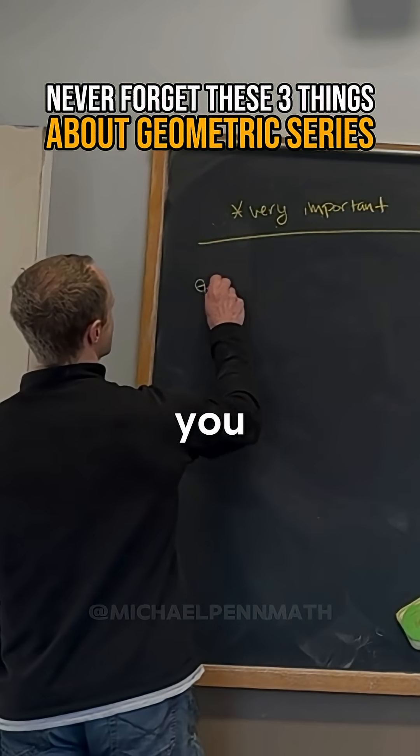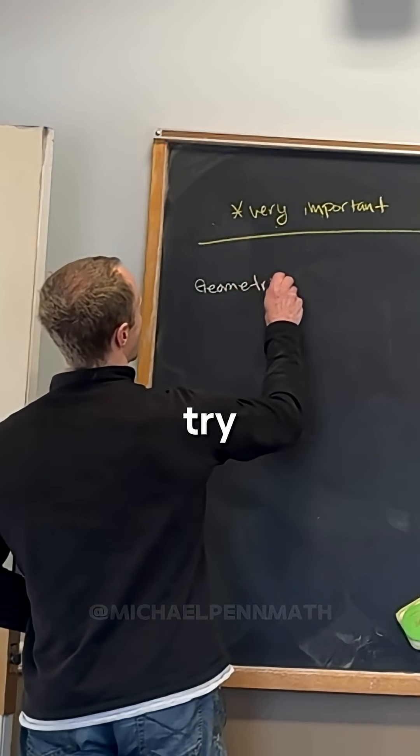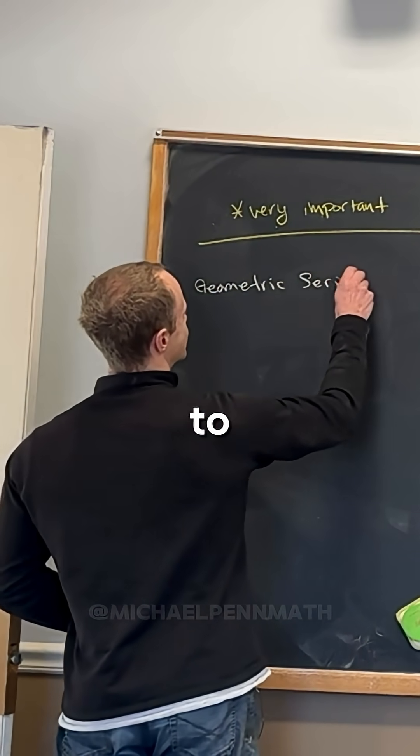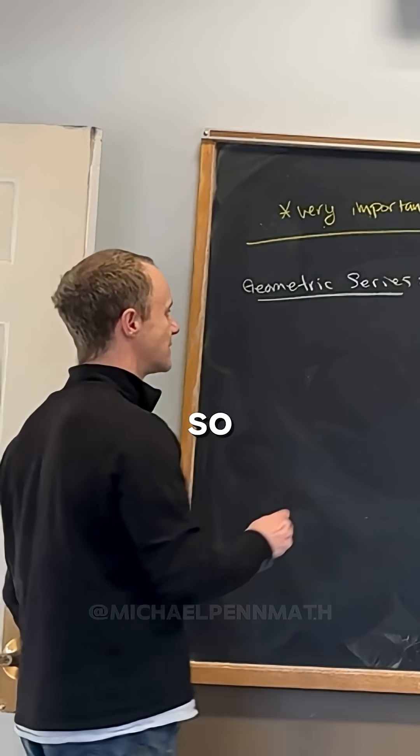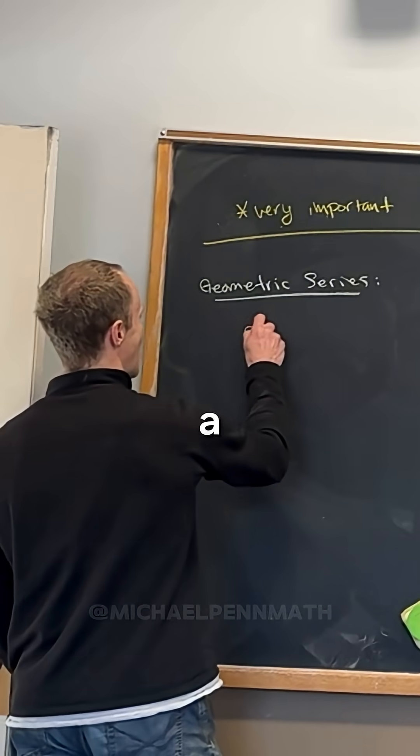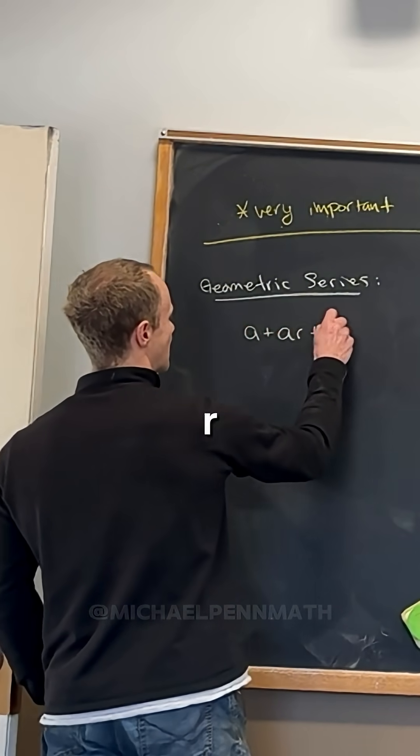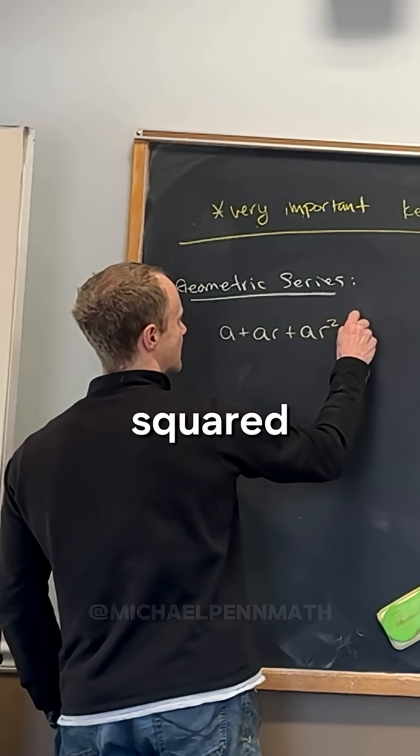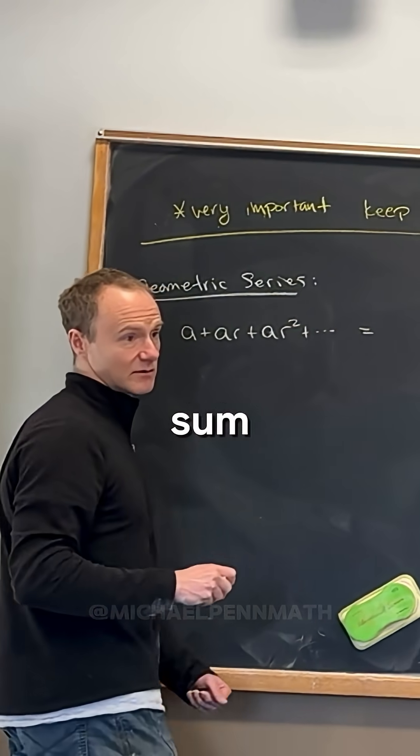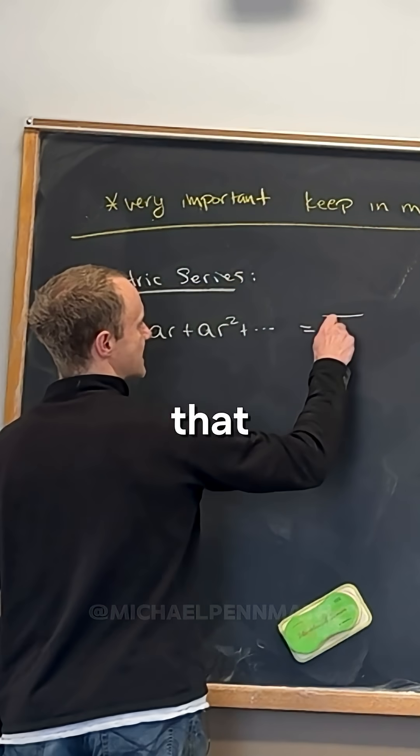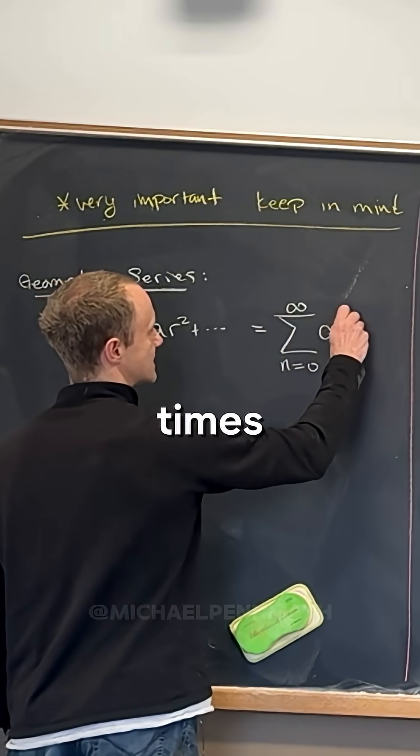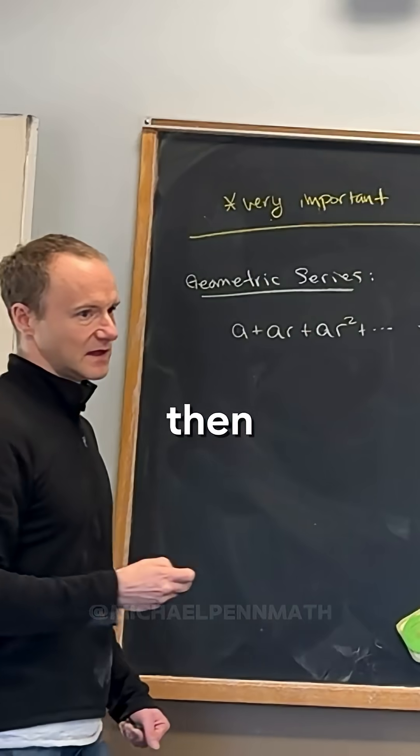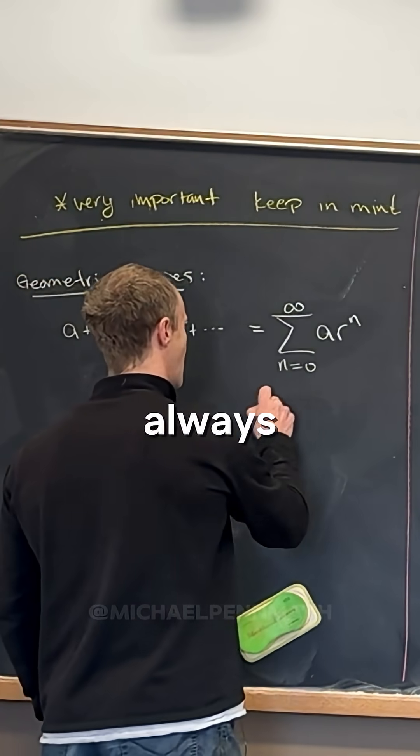This is one thing that you should try never to forget, and that's what a geometric series is. So that's a series of the form a + ar + ar² and so on as an infinite sum. If we were to write that down, it would be the sum as n goes from zero to infinity of a times r to the n.